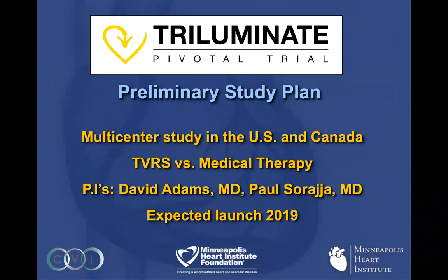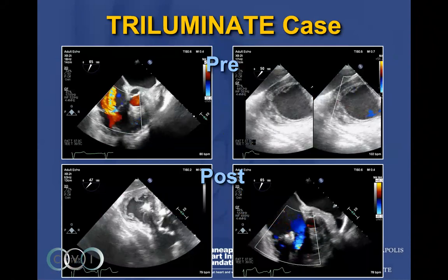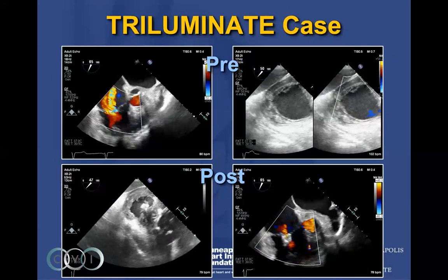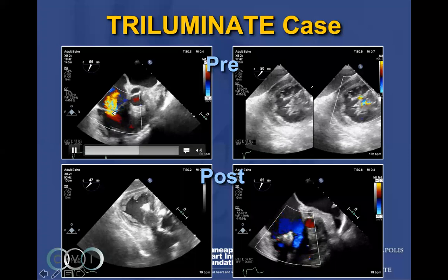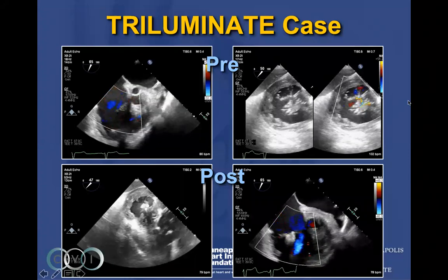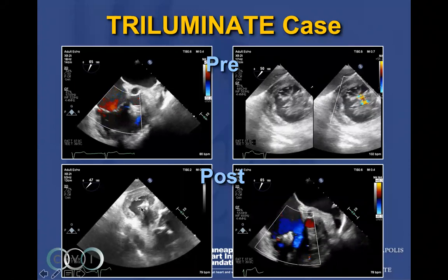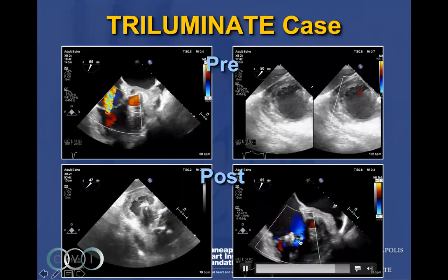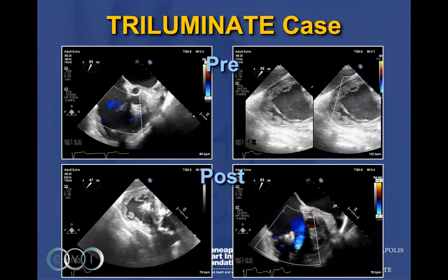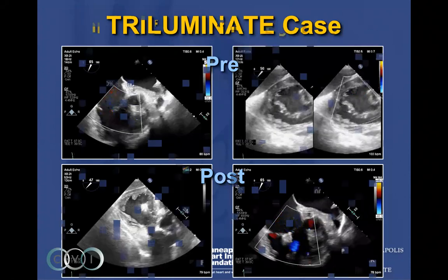In the next month, there will be a Triluminate Pivotal IDE trial — the US IDE trial of the TriClip system. This will be a multicenter study in the US and Canada: a randomization of tricuspid valve repair with the TriClip device versus medical therapy. I am the national PI with David Adams, and we expect to have the first patient in sometime in the next couple of months. Preliminary results from the early feasibility study show TR before and after clip placement, with the TR being eliminated or markedly reduced, particularly in the posterior septal area.